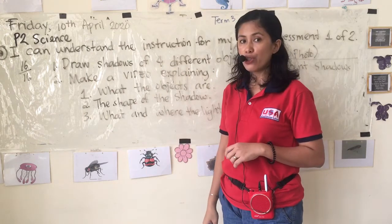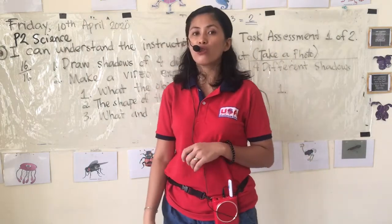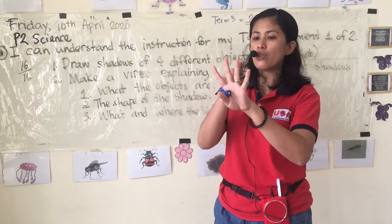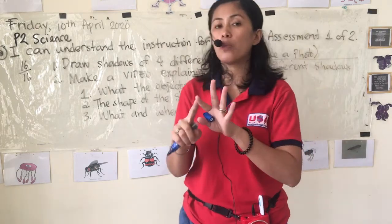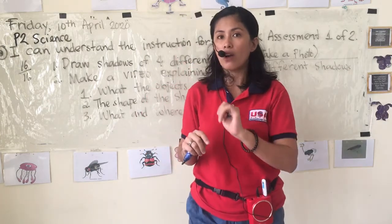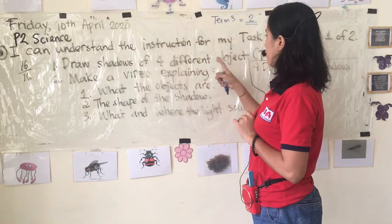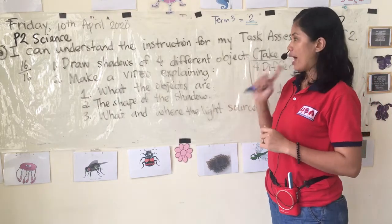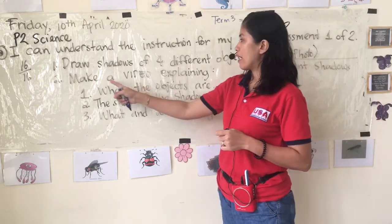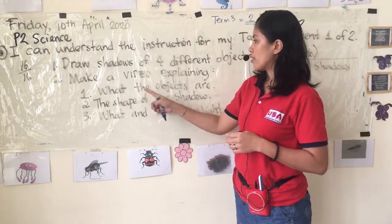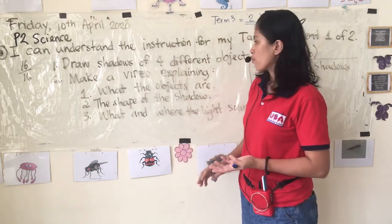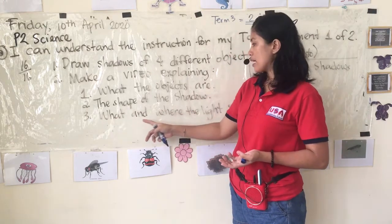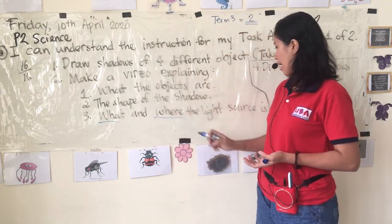There are a few things that you are going to do. The first one is that you are going to draw four different objects and each shadow. How many different objects are you going to draw? Four. After you draw those four different objects and each shadow, you are going to take a picture. After that, you are going to make a video explaining: what the objects are, what the shape of the shadow is, and what and where the light source is.